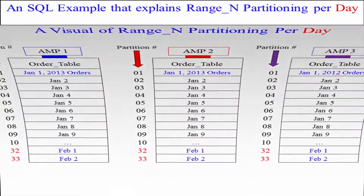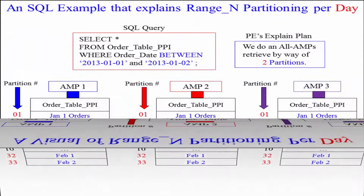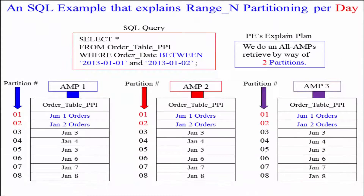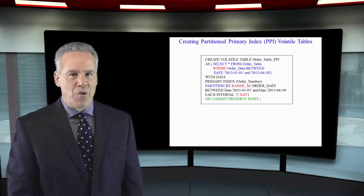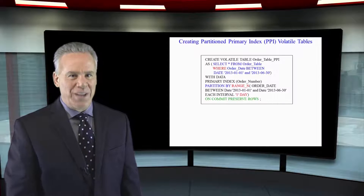Now when I query this all session long with range queries — like what I do in this quarter, or what I do in this month, or what I do between these two days — this is going to be much faster than the normal full table scan.